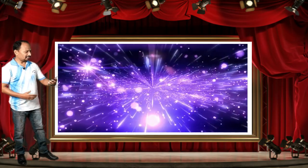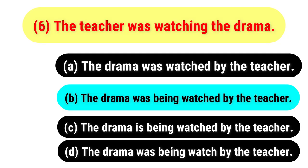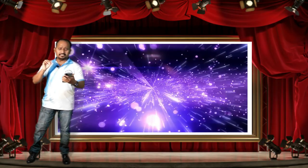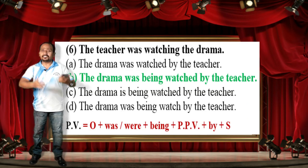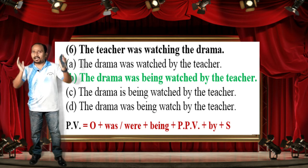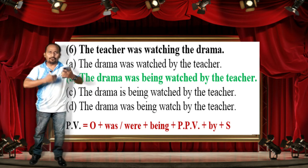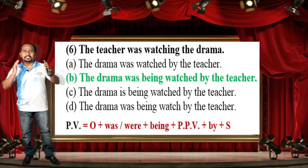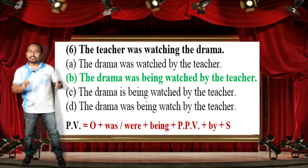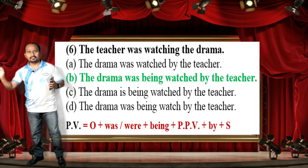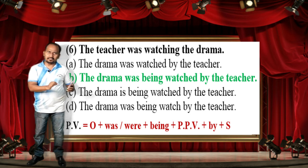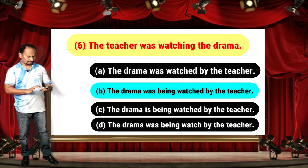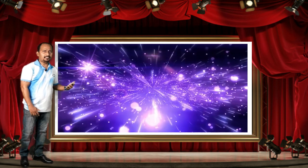The correct answer is option B: 'The drama was being watched by the teacher.' The given sentence is in past continuous tense. The passive voice formula for past continuous tense is: Object + was/were + being + PPB + by + Subject. That is why option B is correct.